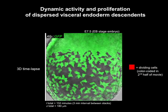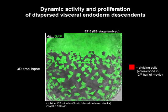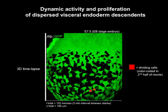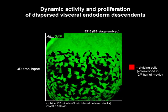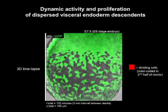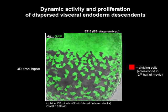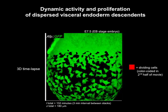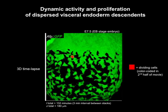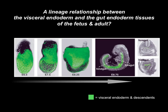Imaging of visceral endoderm descendants after their dispersal, as shown in this time-lapse movie, reveals that they are highly dynamic as they extend and retract projections. They appear to avoid one another and are usually found as single cells. Moreover, they divide, as highlighted here in red, supporting the notion that these cells are maintained by the embryo as it grows, and suggesting that they may be poised to contribute to the later fetus and adult.